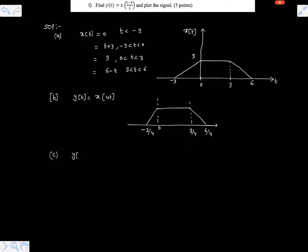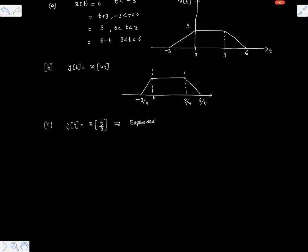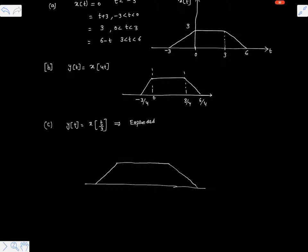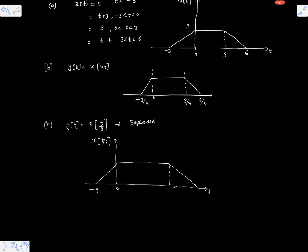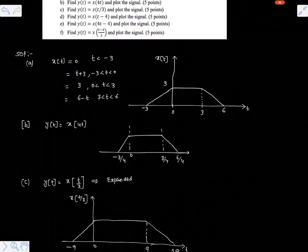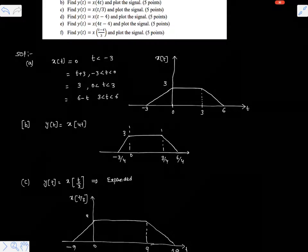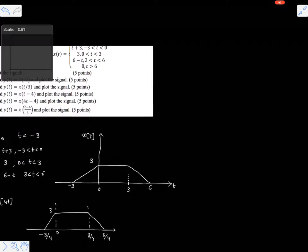Part c is asking y(t) equals x(t/3). This is an expanded version of the given signal. The shape will not change. So here on the time axis, this is x(t/3), with coordinates 0, minus 9, plus 9, and 18. The amplitude values are constant at 3 because we are not performing any operations on the amplitude of the signal.